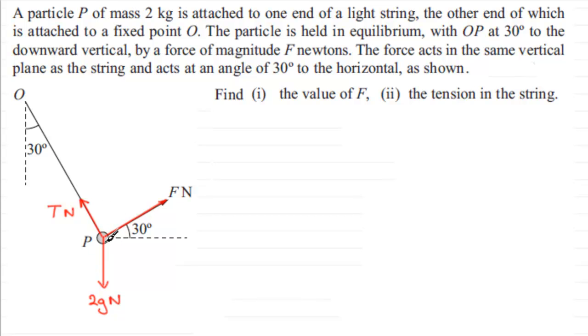Now we've got to find the value of F, which means we're going to need to consider doing some resolving. Normally I would want to resolve upwards and horizontally, but I noticed something about this question which makes it different. If I draw a dotted line up here, this angle here is going to be 30 degrees because these two lines are parallel and we've got alternate angles.